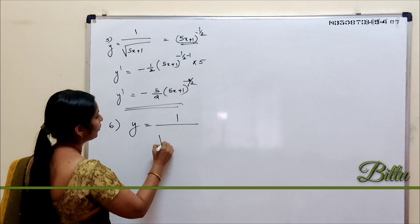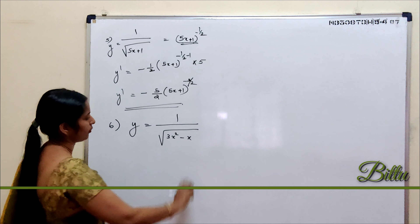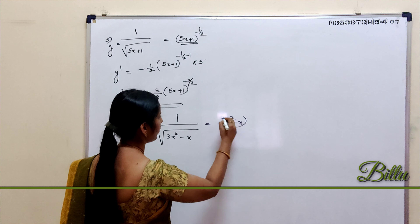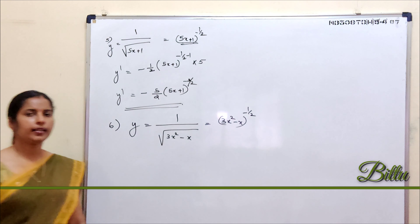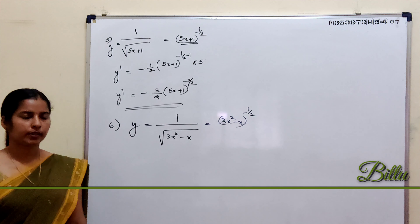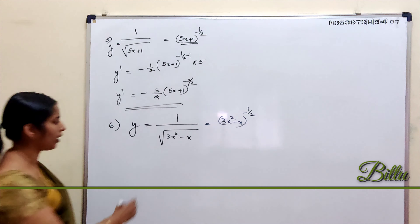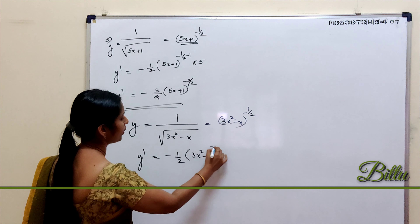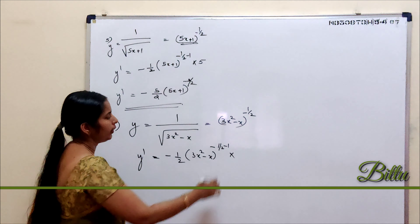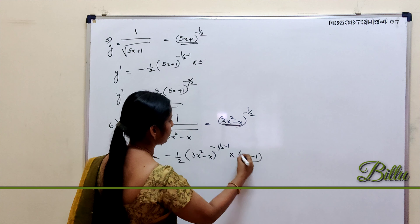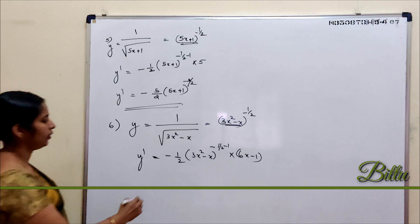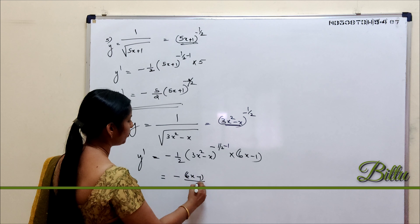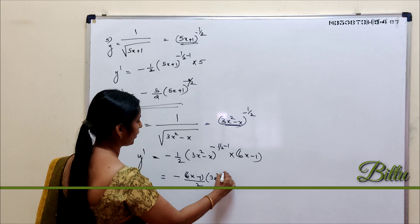Next, consider y = 1/√(3x² − x). This is the form (3x² − x)^(−1/2). Applying the result with n = −1/2, the derivative is (−1/2)·(3x² − x)^(−3/2) multiplied by the derivative of 3x² − x, which is 6x − 1. So y' = −(6x − 1) / [2·(3x² − x)^(3/2)].